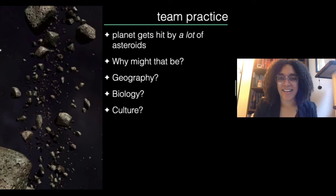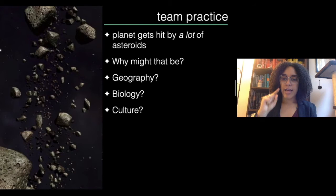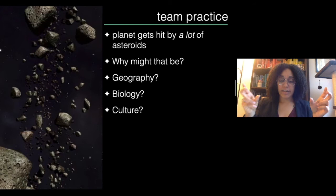All right, welcome back. I hope that your brainstorming session went well. Now I'm going to give you my answers. First: why might the planet get hit by a lot of asteroids? As an astrophysicist, trying to be as realistic as possible, my first reaction is that the planet, over the course of its orbit, intersects with something like an asteroid belt or a Kuiper belt — a part of its planetary system where there are a lot of asteroids. That's my idea.